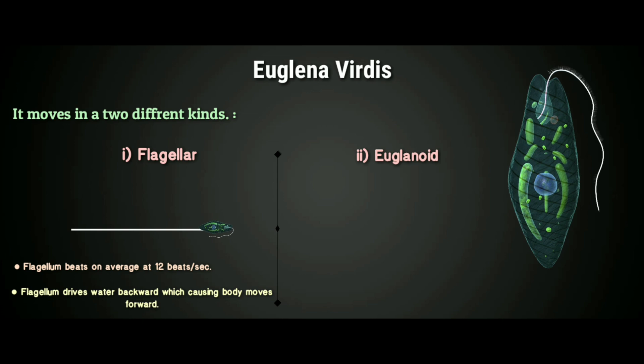Now let's look at euglenoid movement. In this movement, the pellicle possesses considerable flexibility that enables Euglena to perform peristaltic movement. This activity brings about a worm-like wriggling movement.